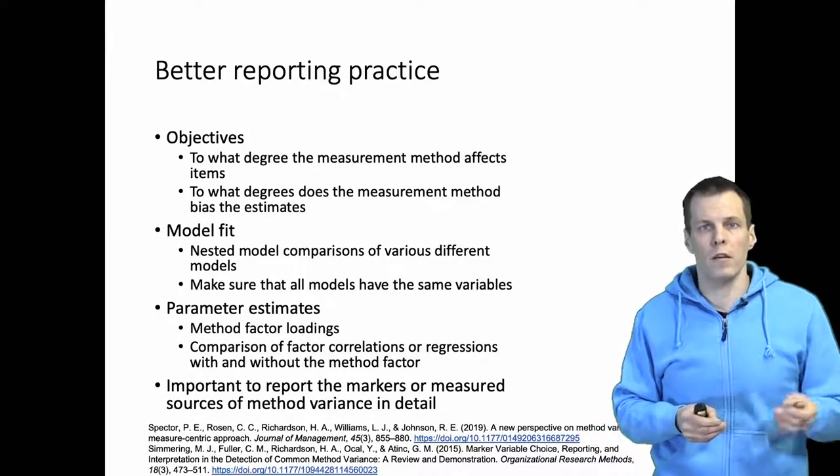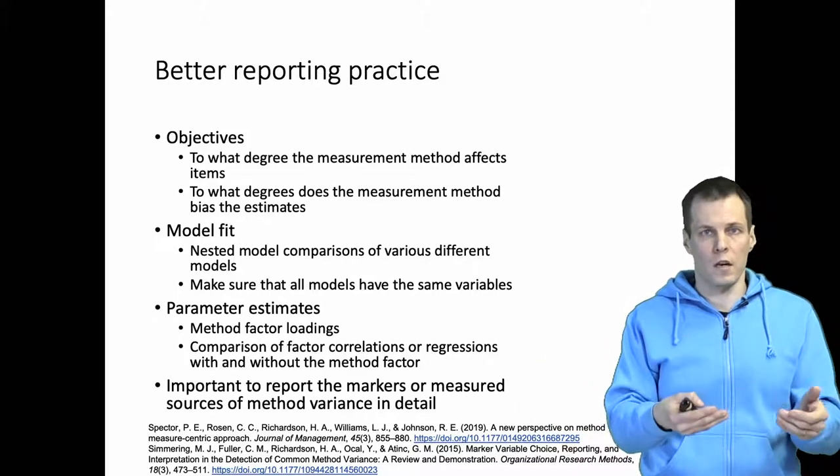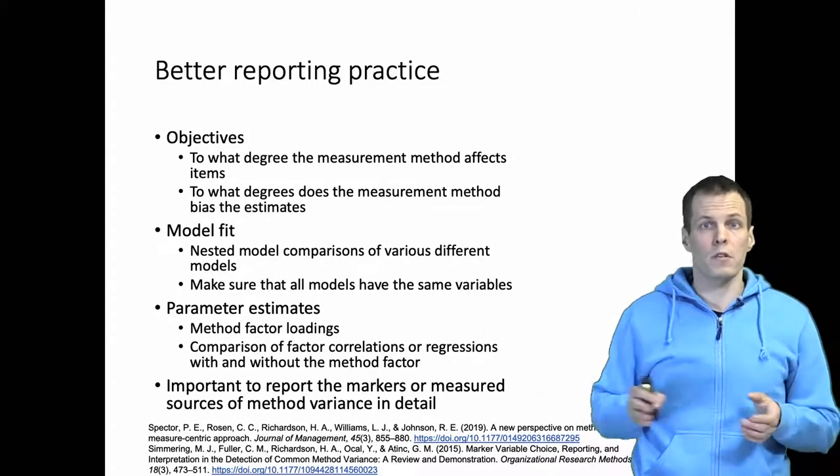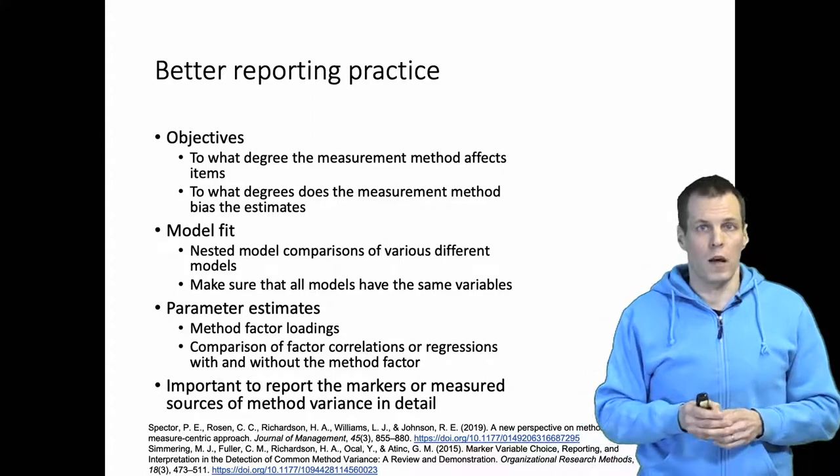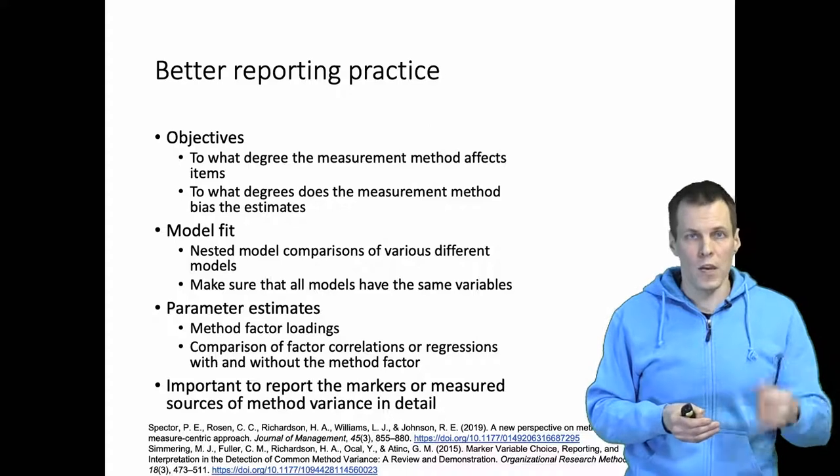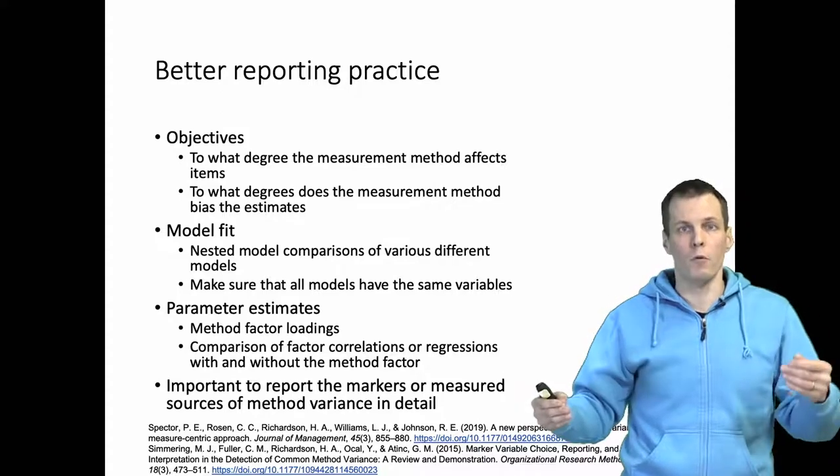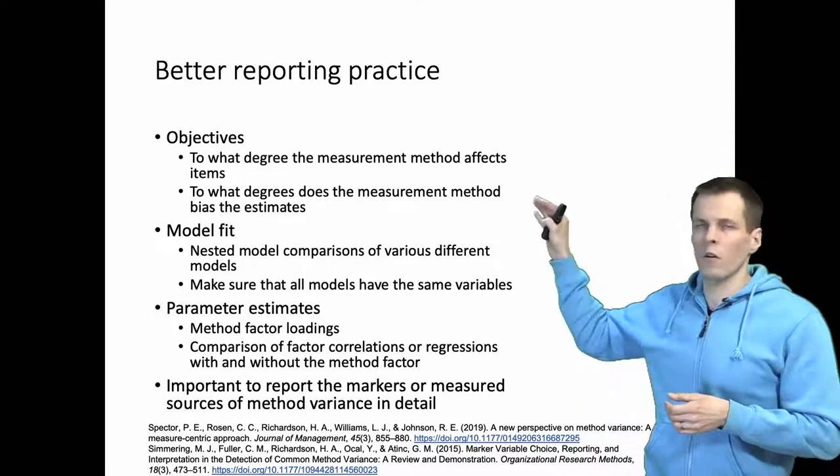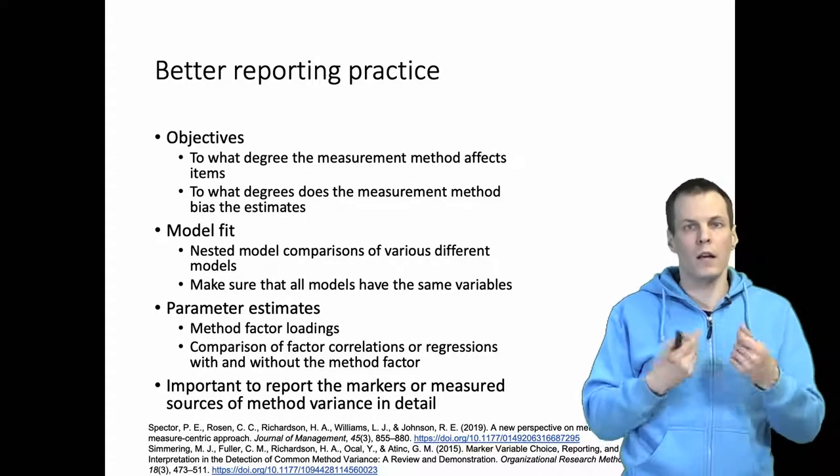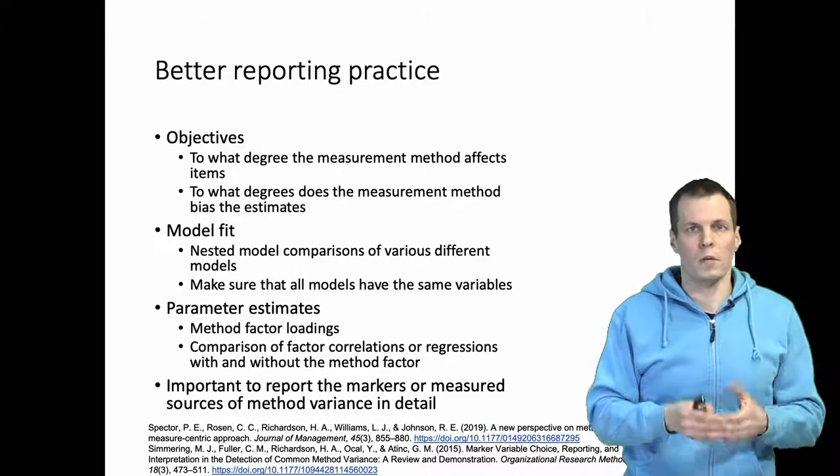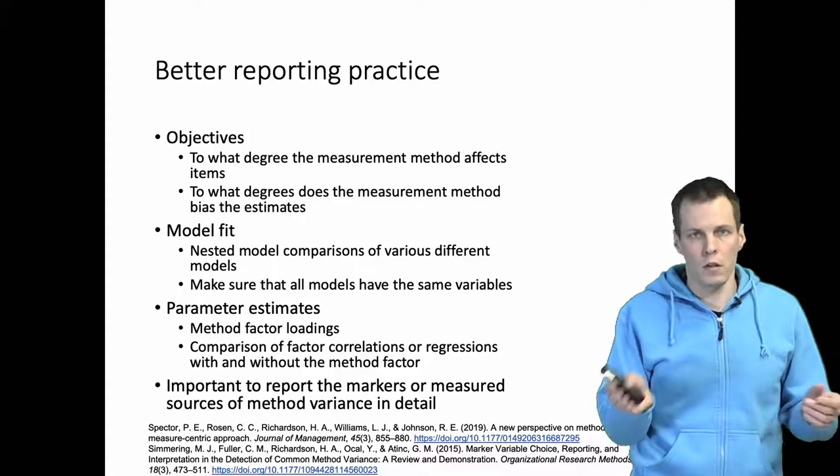It's possible that you have method variance but that does not cause bias. For example, if you have let's say innovativeness measures, there might be a lot of social desirability bias in those measures but if your performance measure is not affected by the same source of bias then the method variance would not cause bias in the regression coefficients, at least not any serious bias. Of course if you have measurement error in the explanatory variable there is some bias but that's a lot less severe than if the same source of method variance affects both the dependent variable and the independent variable. So instead of looking at whether something fits better than the other you should be looking at what degree, the magnitude of estimates, the magnitude of the factor loadings of the method factor compared to the main factors and how much do the regression coefficients between the factors change when you take away the method factor.